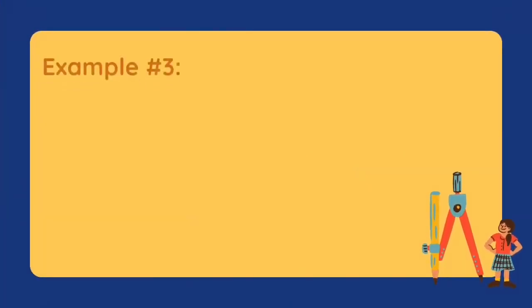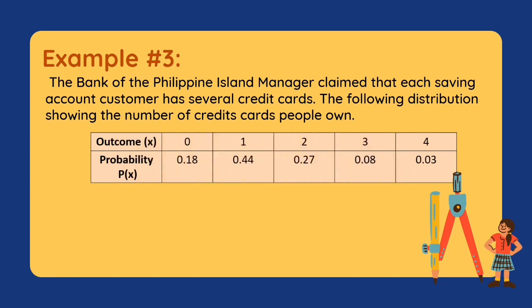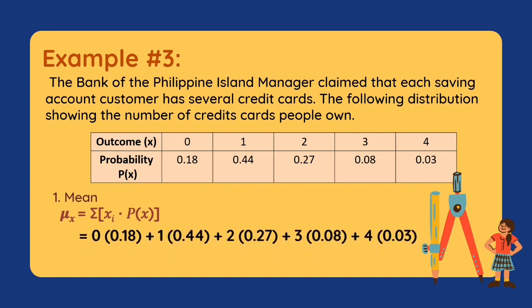Now let's proceed to Example number 3. The Bank of the Philippine Islands manager claimed that each saving account customer has several credit cards. The distribution shows the number of credit cards that people own. The outcomes are 0, 1, 2, 3, and 4, with probabilities 0.18, 0.44, 0.27, 0.08, and 0.03 respectively. Applying the formula of the mean: 0×0.18 + 1×0.44 + 2×0.27 + 3×0.08 + 4×0.03. The value of our mean is equal to 1.34.